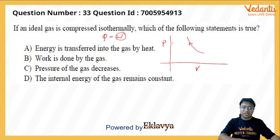It has not absorbed the heat. So option A says energy is transferred into the gas by heat - that's not correct. Option B: work is done by the gas - again not correct because W is negative, so that means work is done on the gas.